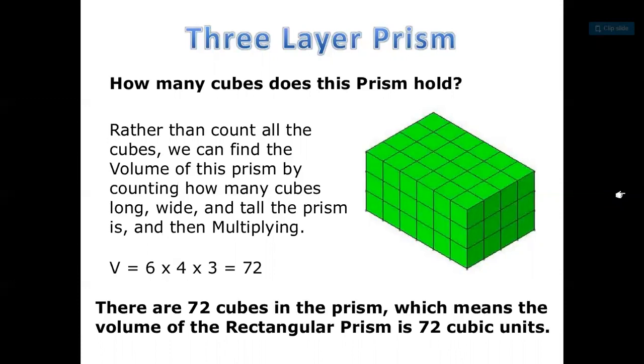The height here is 3, the width is 4, and the length is 6, so 6 times 4 times 3 is the volume of the rectangular prism.